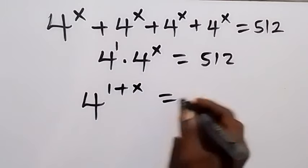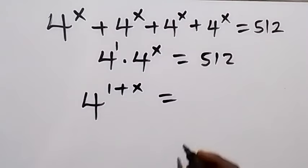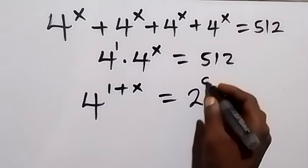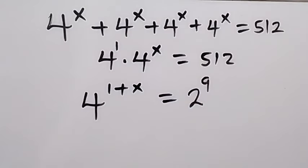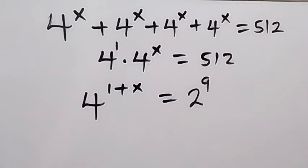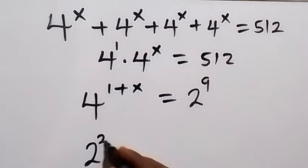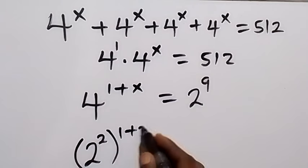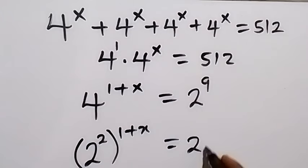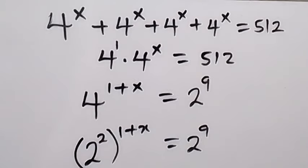Then equals to — we can express 512 as 2 to the power 9; we express it in base 2. And in the same way, we can also express this 4 in base 2, and that will be 2 raised to the power 2. So: 2 raised to power 2, raised to power 1 plus x, equals 2 raised to power 9.